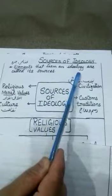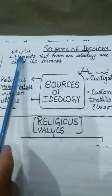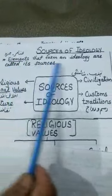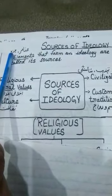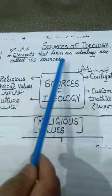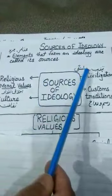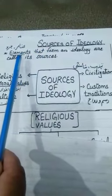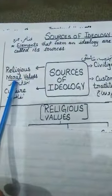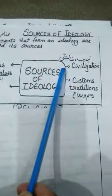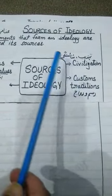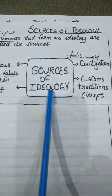Number one topic is sources of ideology. Elements that form an ideology are called its sources. These elements are helpful for the formulation of ideology — the elements that are helpful in making an ideology are called its sources. These elements include religious or moral values, culture, civilization, custom, and tradition.